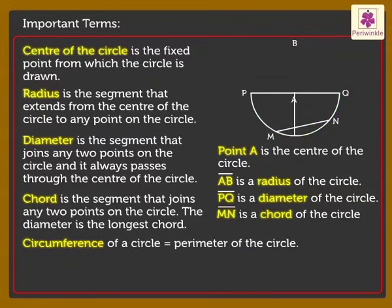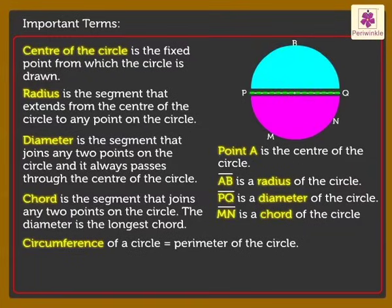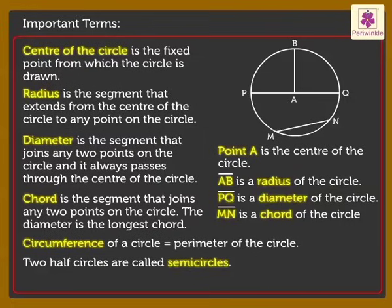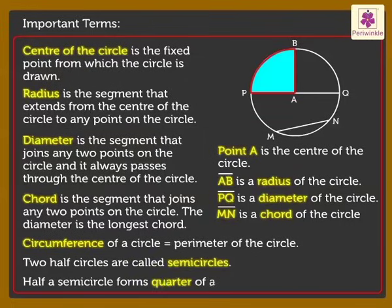When we fold circle along the diameter, we get two half circles. They are called semicircles. And lastly, half a semicircle forms quarter of a circle.